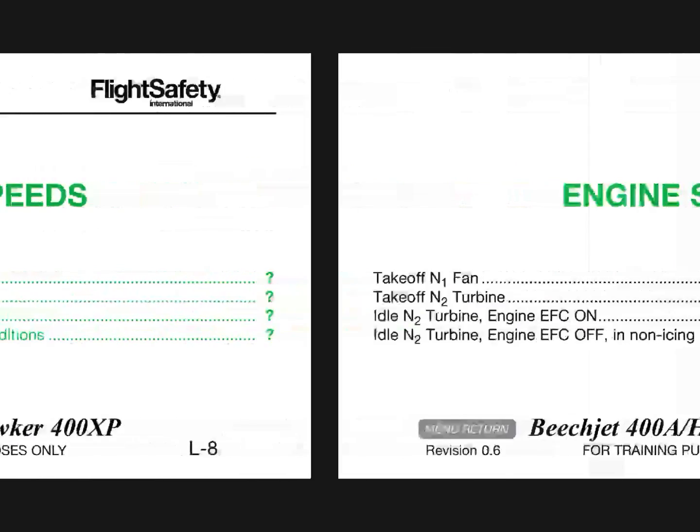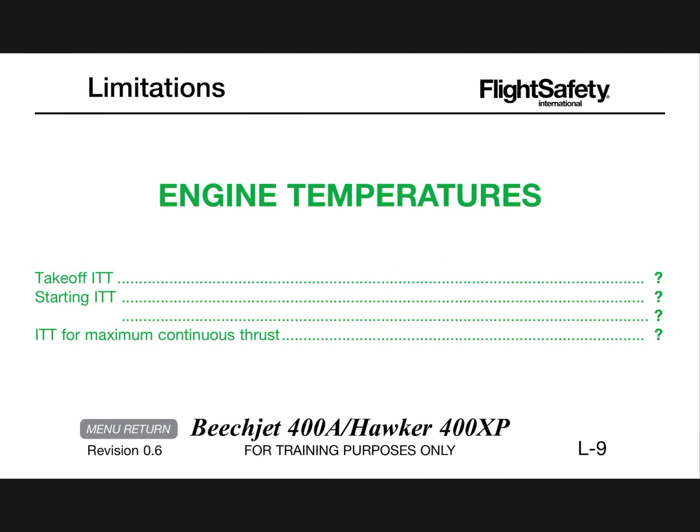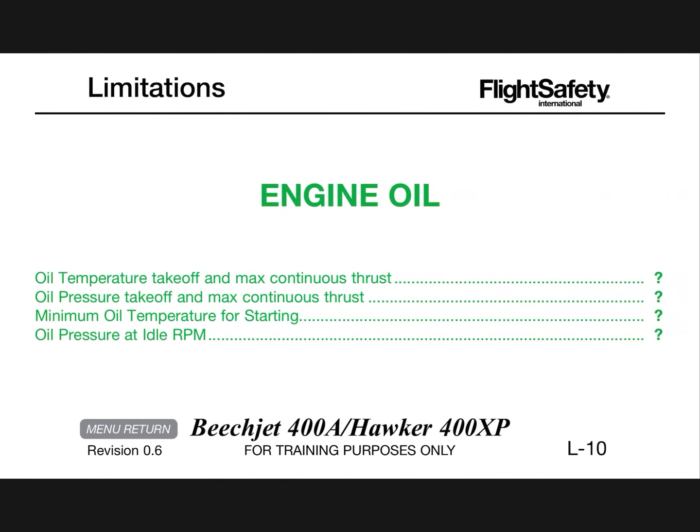Engine speeds: takeoff N1 fan 104 percent, takeoff N2 turbine 96 percent. Idle N2 turbine engine EFC on is 52 percent. Idle N2 turbine engine EFC off in non-icing conditions is 46 percent. Engine temperatures: takeoff ITT 700 degrees Celsius. Starting ITT 550 to 600 for four seconds maximum, 600 to 700 for two seconds maximum. ITT for maximum continuous thrust 680 degrees.